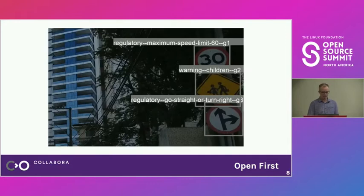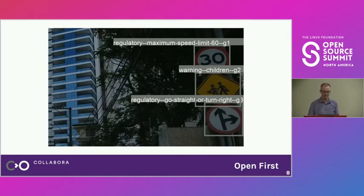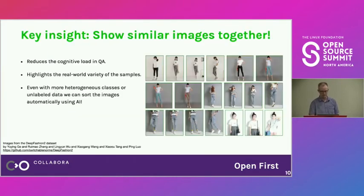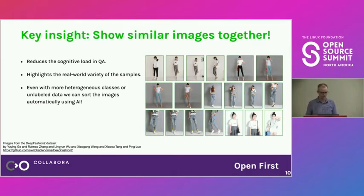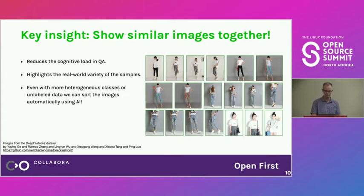Going back, you can see that the label on the 30 speed limit sign was set to "limit 60." But how would you spot that? You would have to spend an extraordinary amount of time. The key insight is that showing similar images together makes whatever you want to do with the data so much easier — it reduces cognitive load so you can focus on one thing at a time.